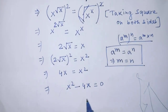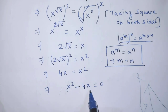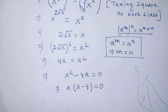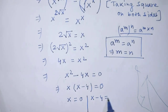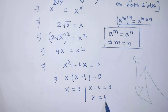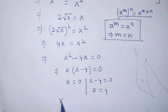On the left hand side of this equation, the common factor of both terms is x. So we can write x times x minus 4 is equal to 0. According to the zero product rule, x is equal to 0, and x minus 4 is equal to 0. From the second equation, x is equal to 4. So the value of x will be 0 or 4.